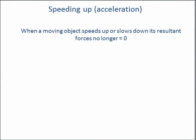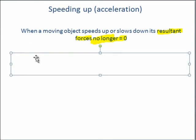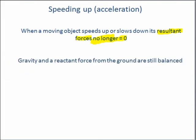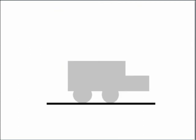Next, let's talk about what happens when a car is speeding up. The car is no longer at a steady state, so its resultant force no longer equals zero. Gravity and the reaction force from the ground still equal zero — they still balance each other out because when a car speeds up it's not going to be floating in the air or falling through the floor. These forces are always balanced when the car is driving on a solid surface.